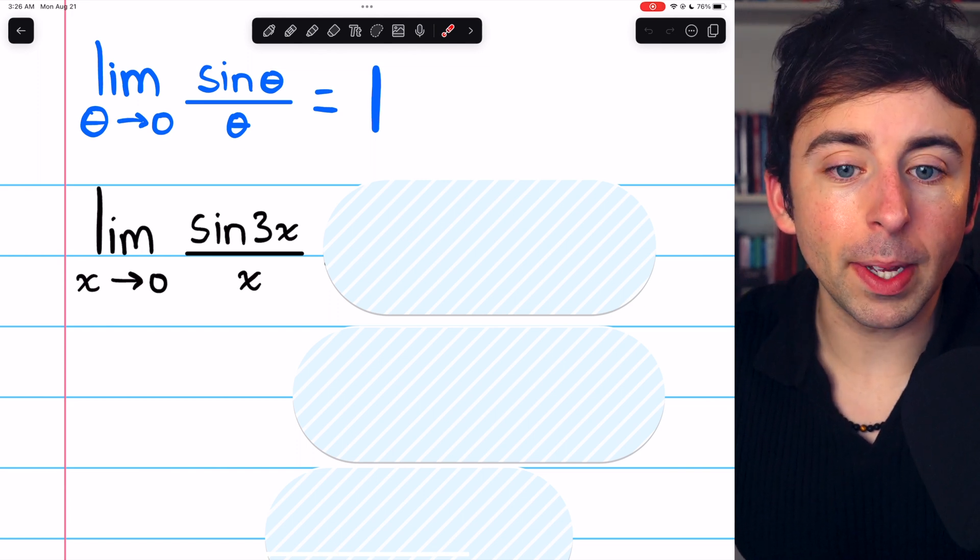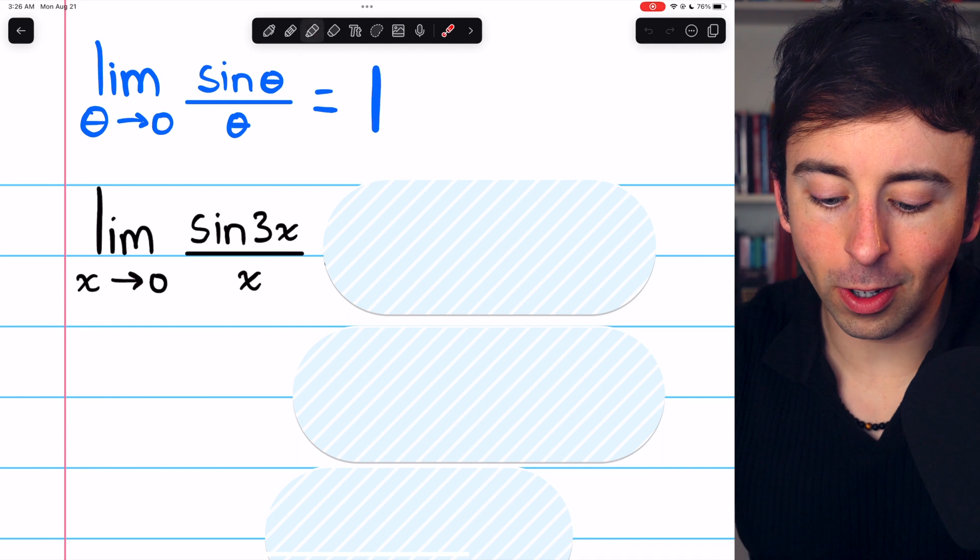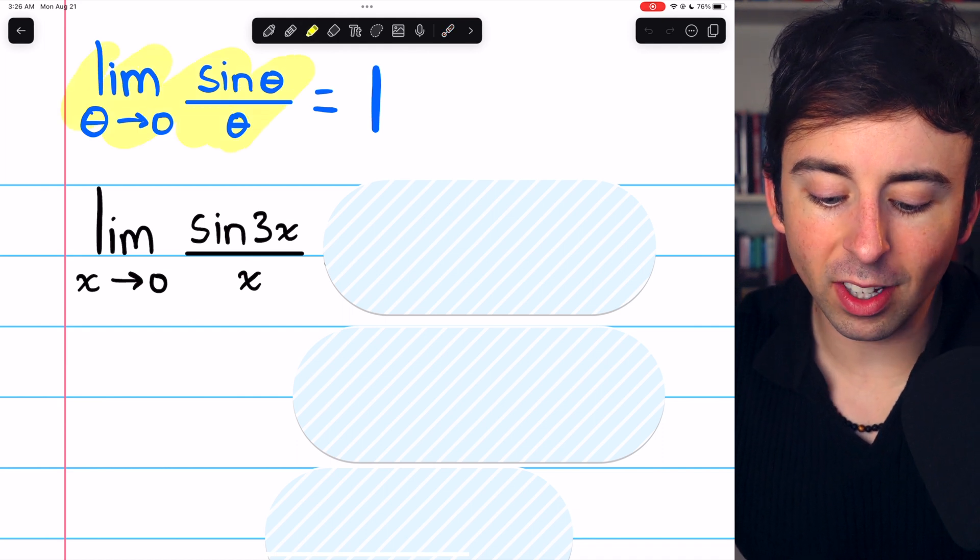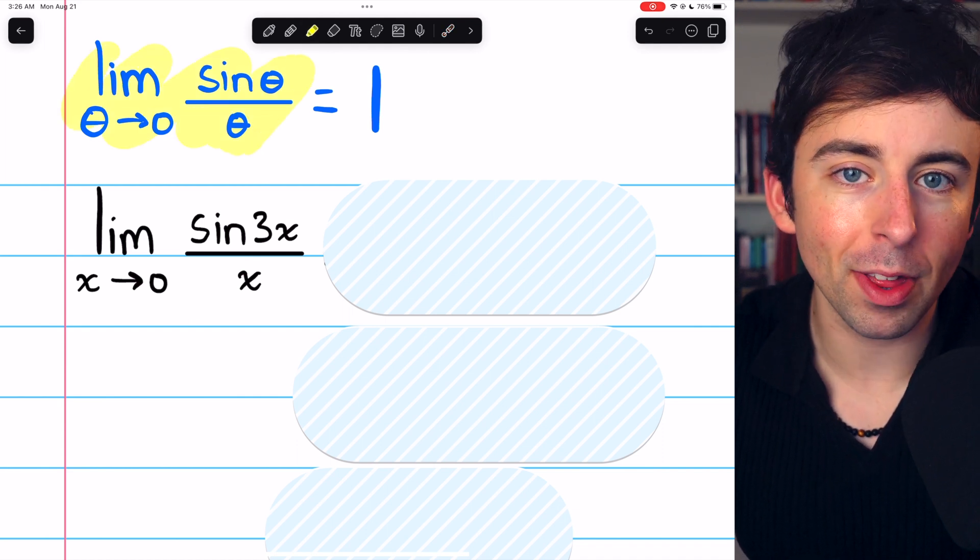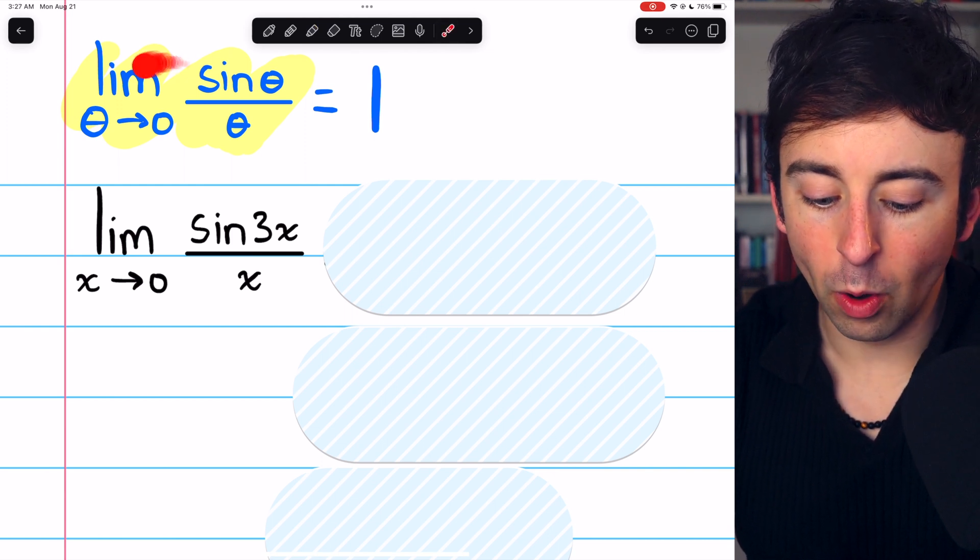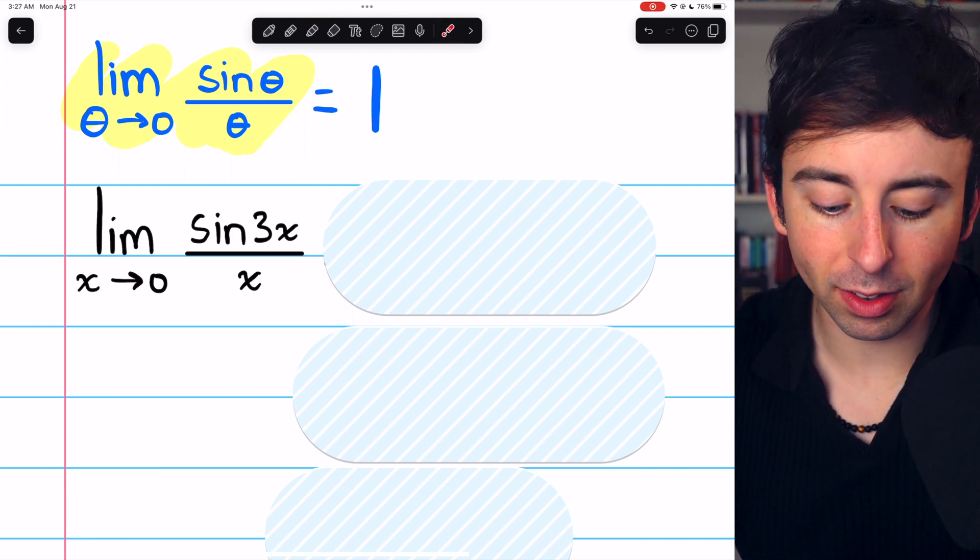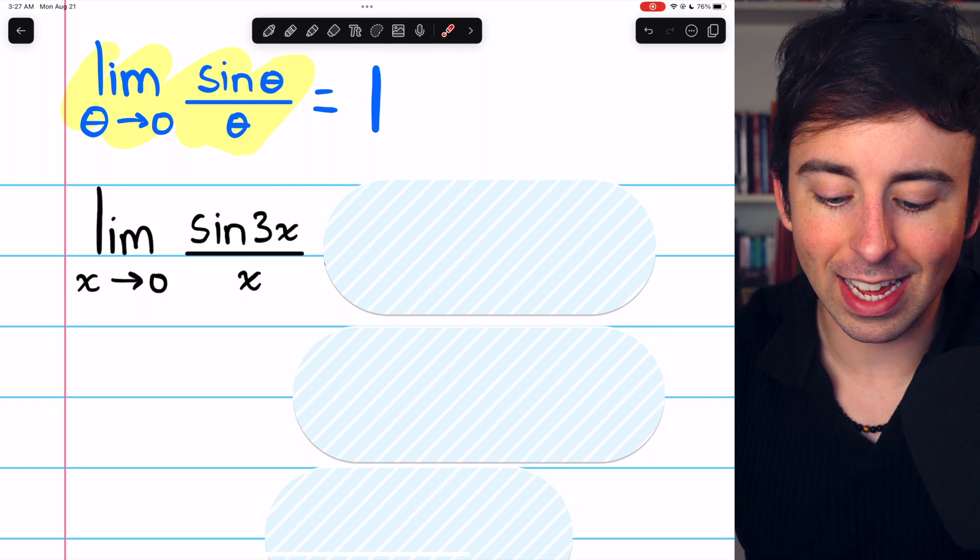The idea with this sort of limit is that we want it to look like this because if it looks like a sine of a thing over a thing with the thing approaching 0, we know what that limit equals. So we want this to look like this.